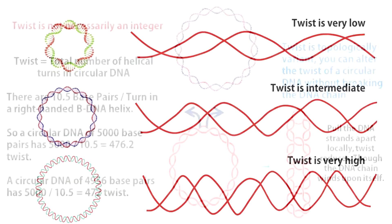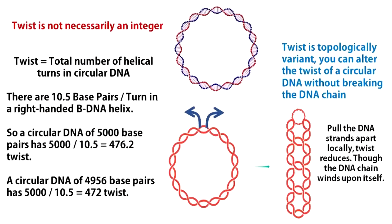I have presented an example of three circular DNA molecules here. You should always keep in mind two crucial points about twist. First, twist is not necessarily an integer. Take an example of a circular DNA of 5000 base pairs — its twist will be 5000 divided by 10.5, that is approximately 476.2. Second, twist is not topologically invariant, meaning without breaking the DNA chain, you can alter its twist. Simply pull the DNA chain from somewhere to locally separate the two strands — this will decrease the twist.